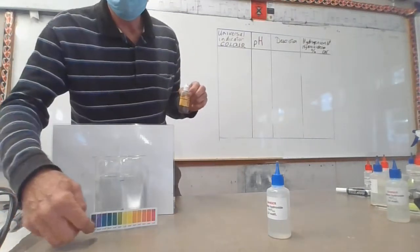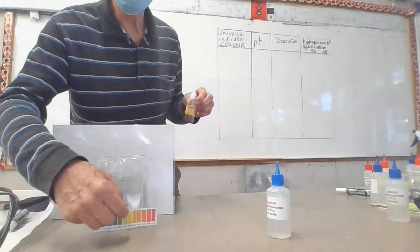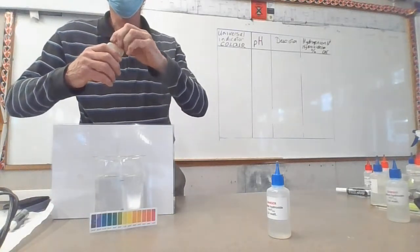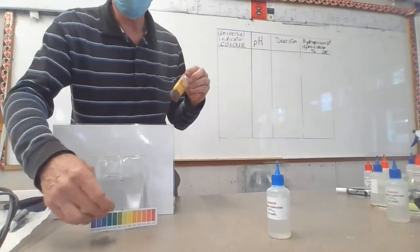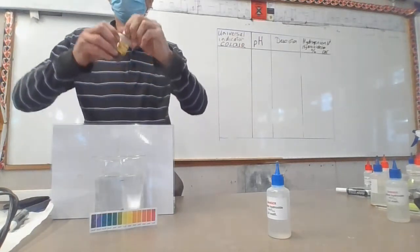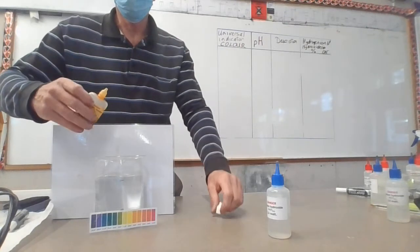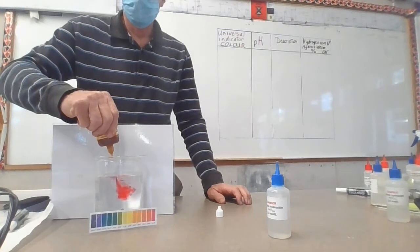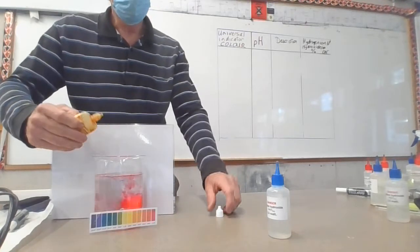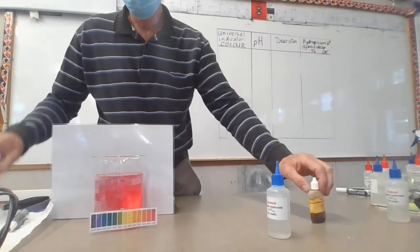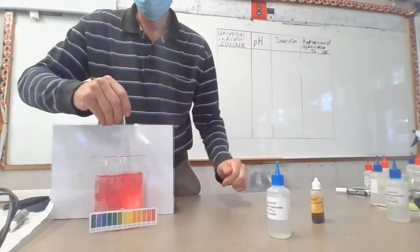This scale here is the pH scale. The colors are the colors that universal indicator will go as the pH changes, so we can look at the color of our solution and work out the pH. Putting in a good squirt of universal indicator into the beaker, we see that this is red, and red on the scale is a pH of 1 or 0.